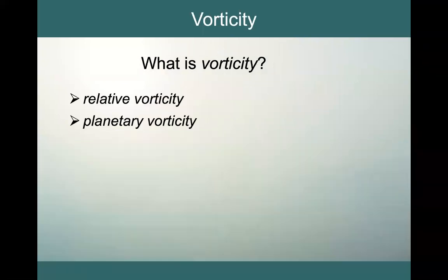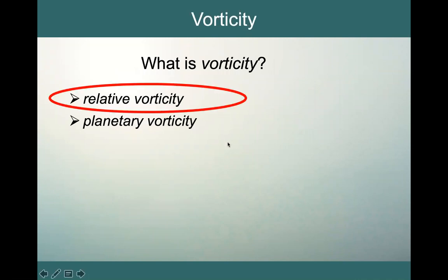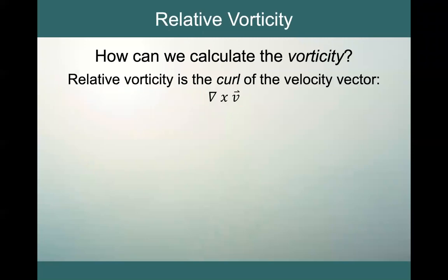When we look at defining vorticity, we break it up into two pieces: the relative vorticity and the planetary vorticity. In this video, we're going to be talking specifically about the relative vorticity. The relative vorticity is defined as the curl of the velocity vector — that's the gradient crossed with the velocity vector.